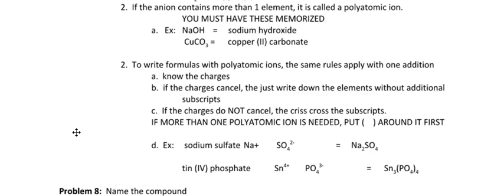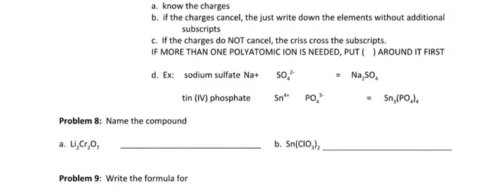So let's go ahead and name these compounds. The first one is lithium. Where is lithium found on the periodic table? It is a group one. Do you need Roman numerals for group one? No. So all you have to do is write lithium, and then what is Cr2O7? When you had to memorize, it's a dichromate.